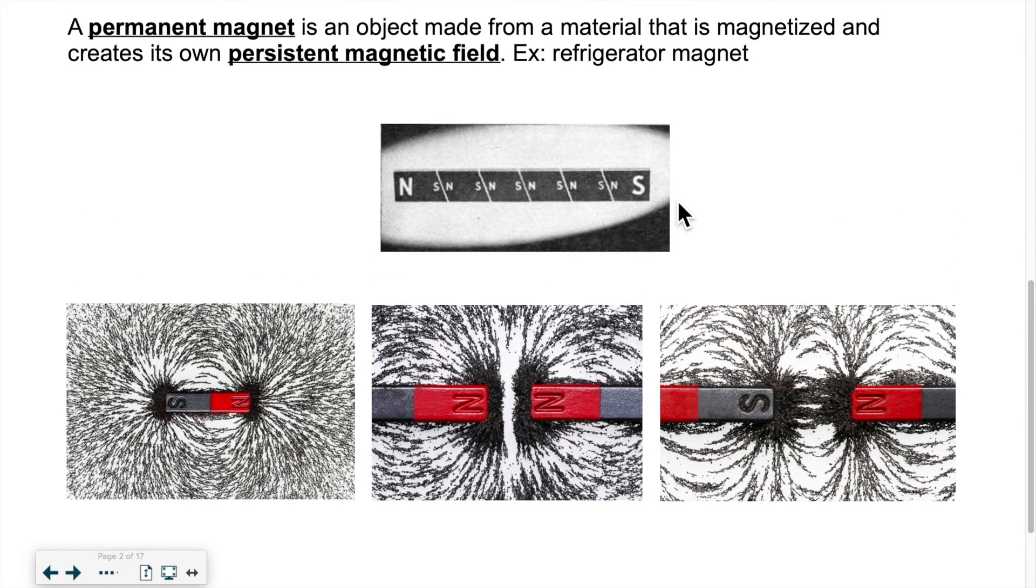Now if you take a magnet, a permanent magnet, and you break it into sections - originally here I had a north, here I had a south - if I break it into sections I end up with smaller permanent magnets. This side will become a south, this side will become a north, this side a south, and so on until I get to the other end. Because opposites attract, when we break the magnet that's how the dipoles get formed. South, north, south, north, and so on and so forth.